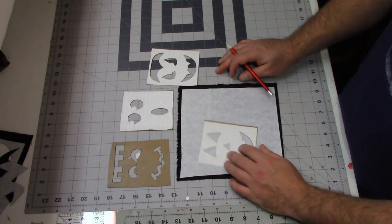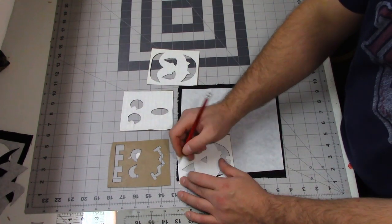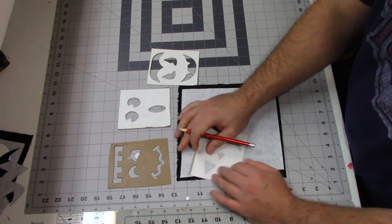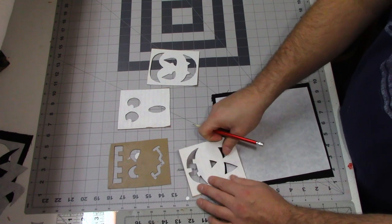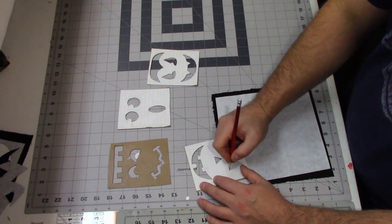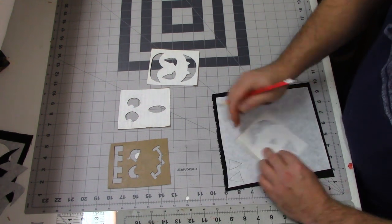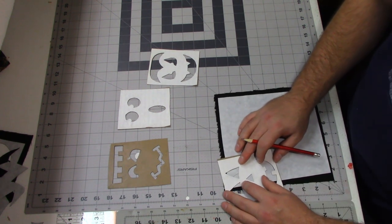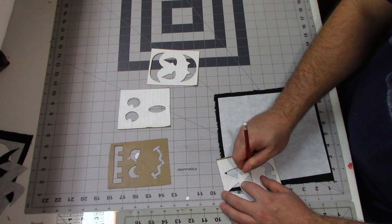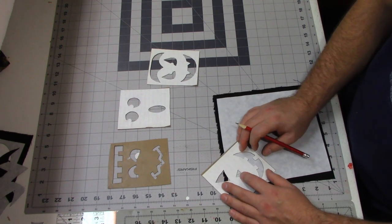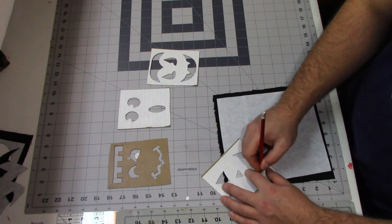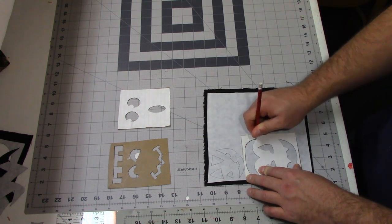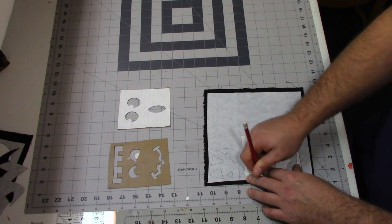So now I'm just going to grab my face templates and I'm going to trace them onto my heat and bond. And just to save some heat and bond, I like to place these together so there's very little gap in between. And since I'm doing four, I'm going to do that to all four of my stencils.